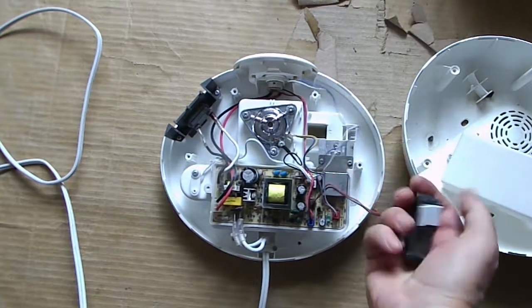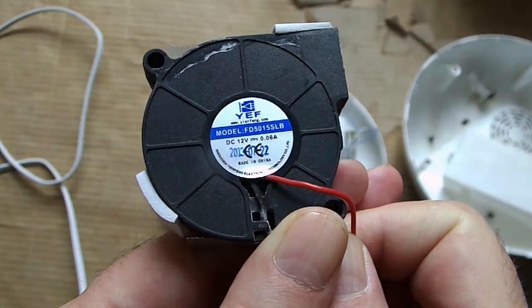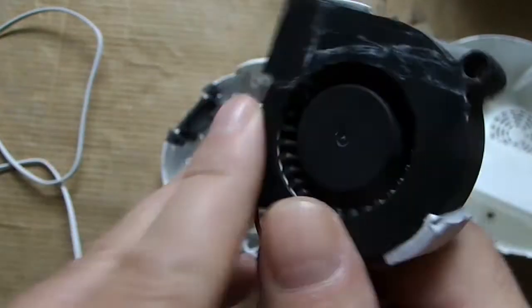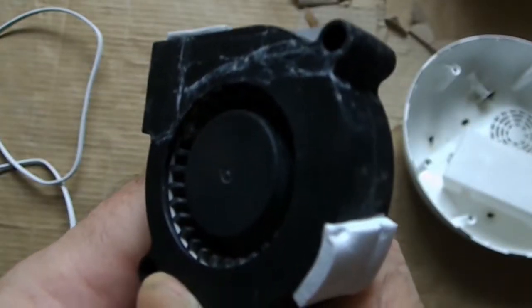Let's start with the fan. It's just sitting in a slot and pops right out. It's a standard 12-volt squirrel cage fan. Good to scavenge for reuse.